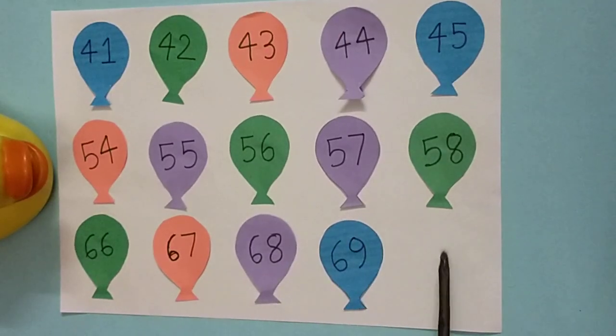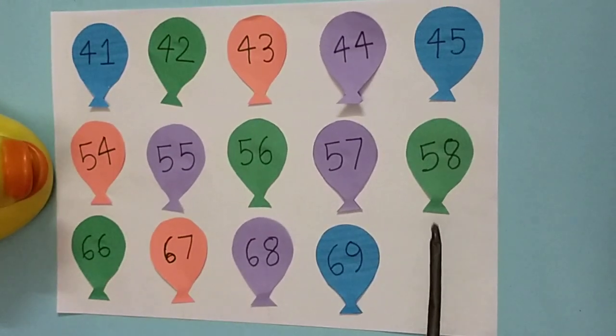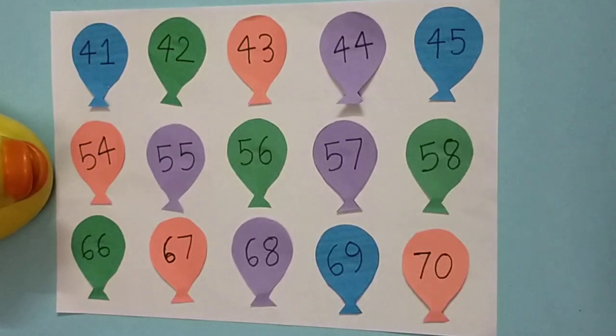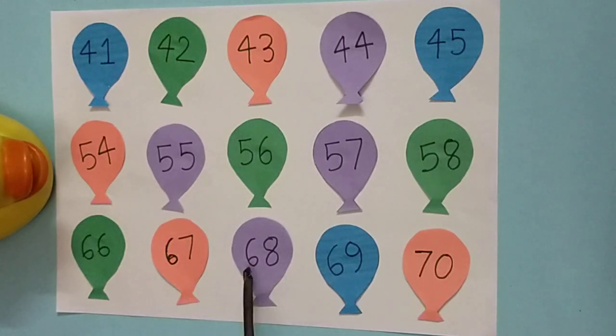What will be here? The ducky is very confused here. Can you help him? Yes. Oh very good. 7, 0, 70. Can you say with me? 66, then 67, then 68, 69, and 70.